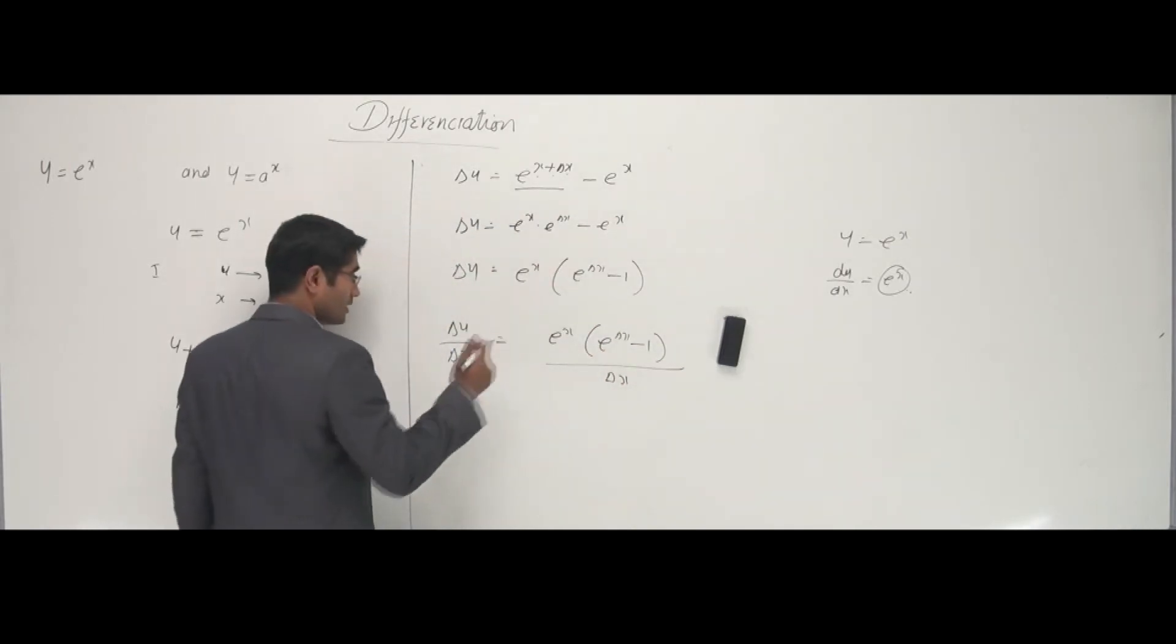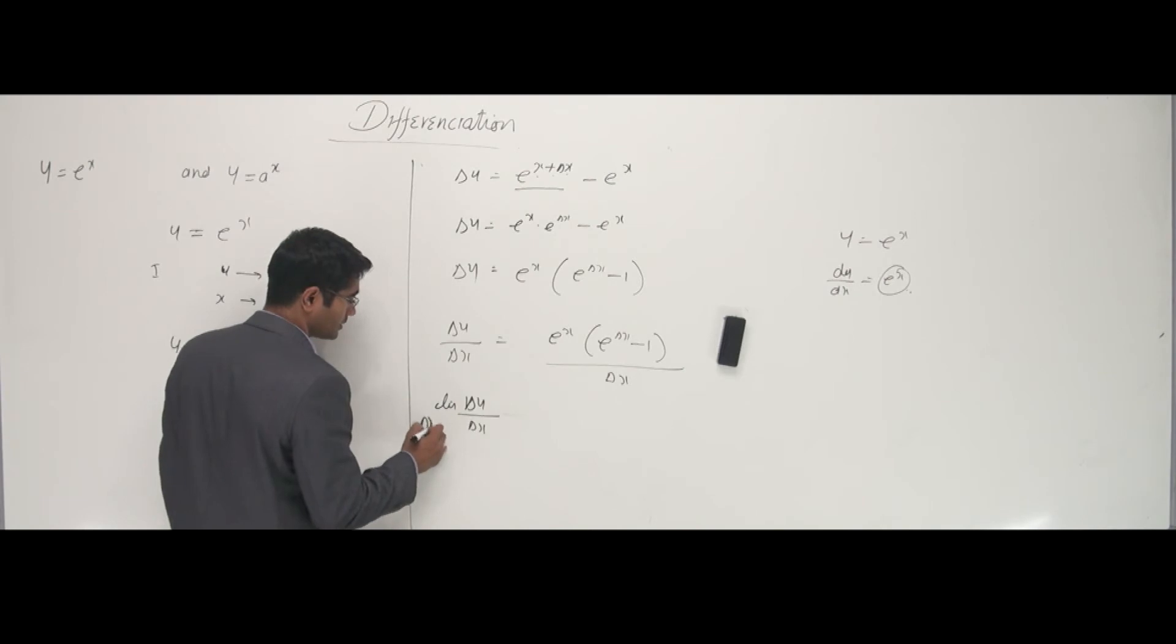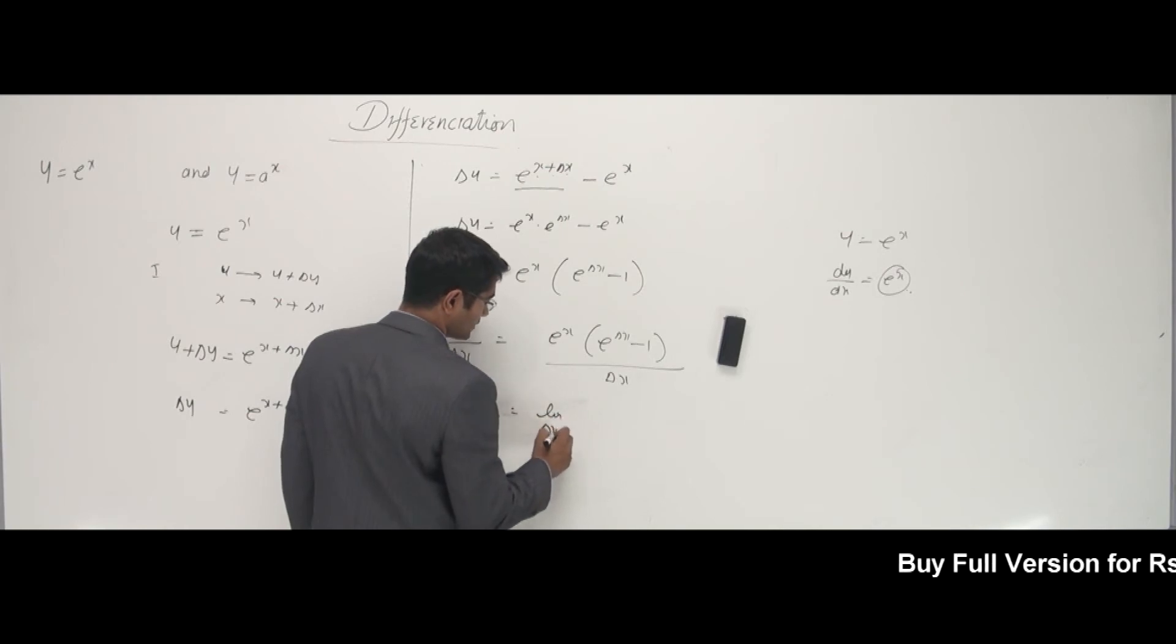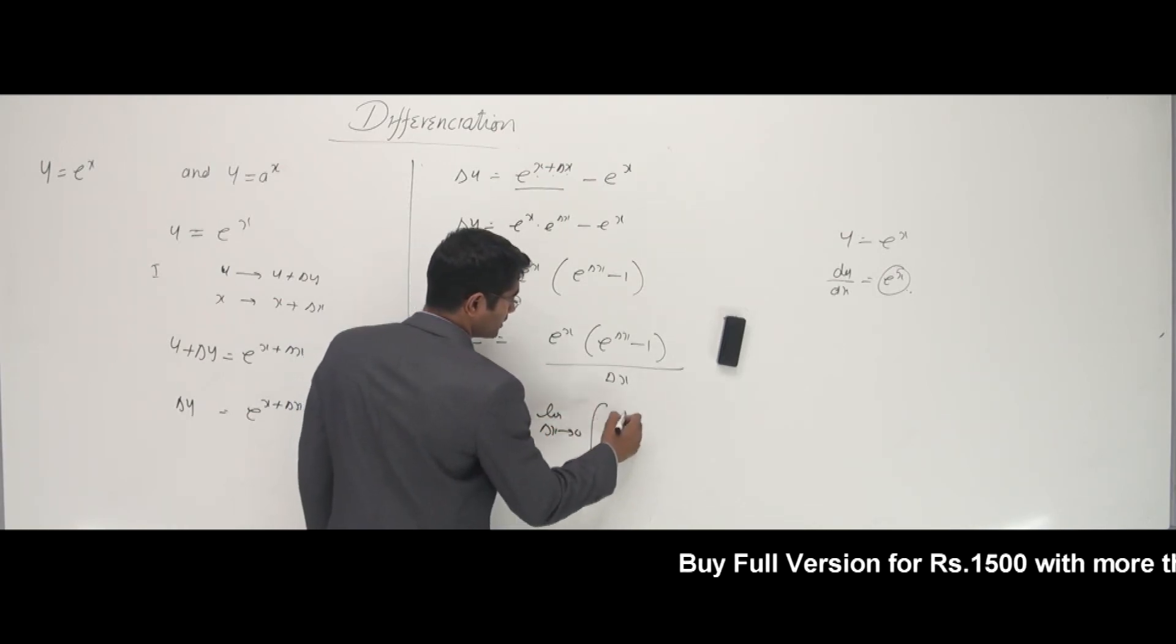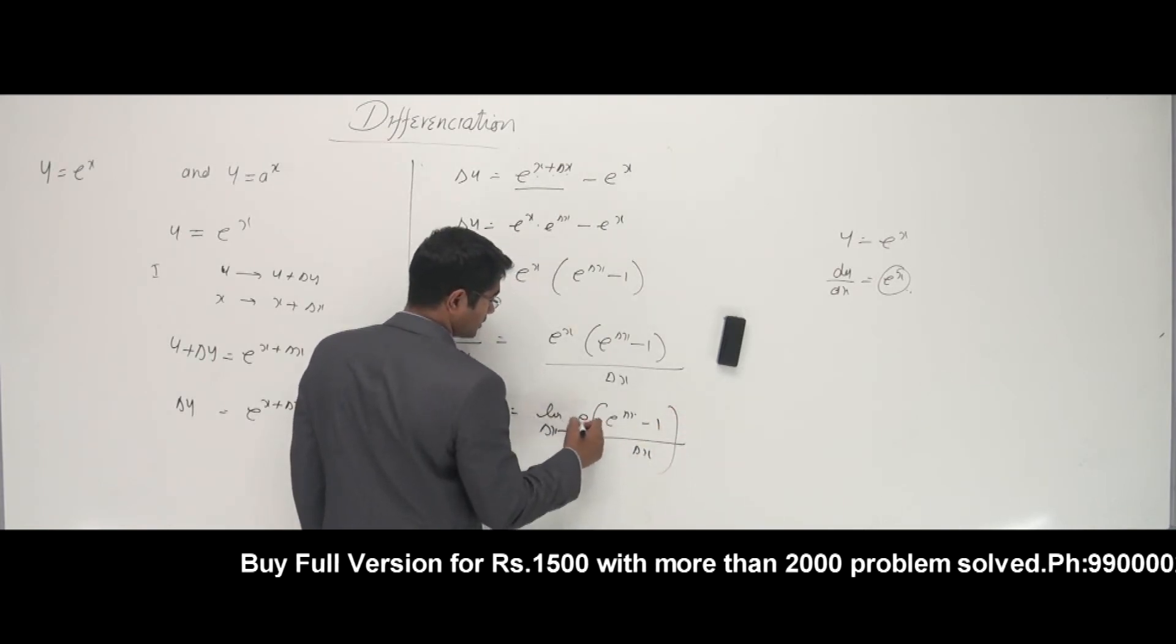If that is the case, let me apply the limits. Limit of delta y by delta x where delta x tends to 0. There goes like e power x. I can write limit of delta x tends to 0. And e power delta x minus 1 by delta x into e power x.